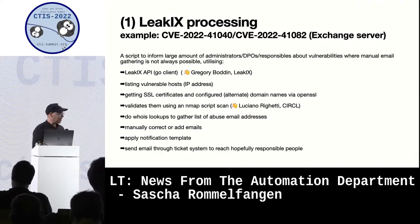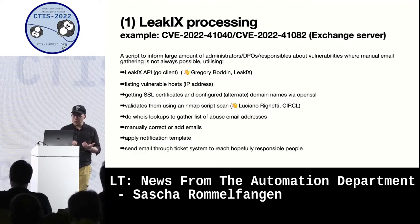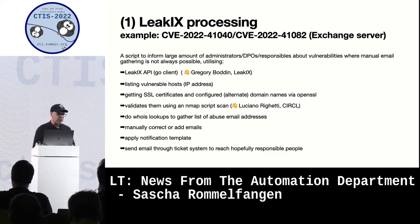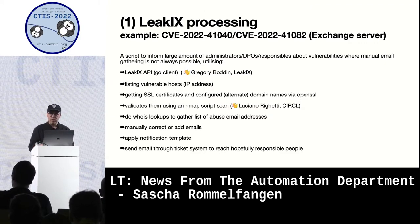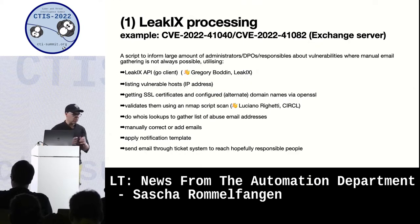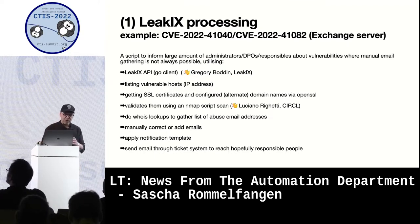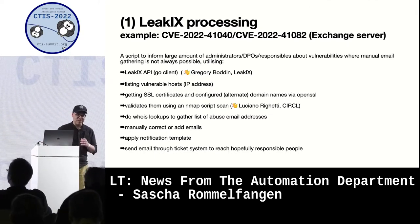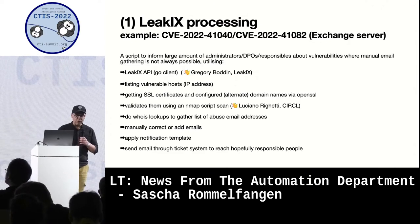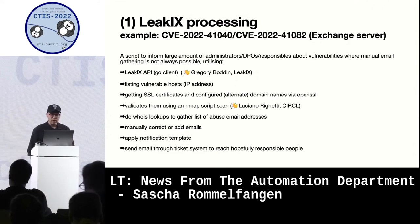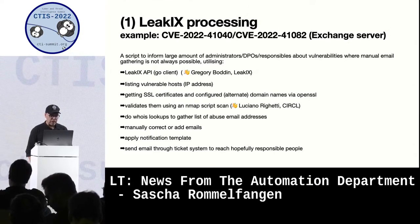So we collected a few things and glued it together, like the Leakix API usage through the Go client. Then we get a list of IP addresses. From there we use OpenSSL to get the associated DNS names or alternate domain names. Then we do an nmap script, because usually we do not blindly take data from anyone but we validate the information we get, so that we know what we are doing — thanks to Luciano from the team who did a very nice nmap scanner especially for Exchange vulnerabilities.